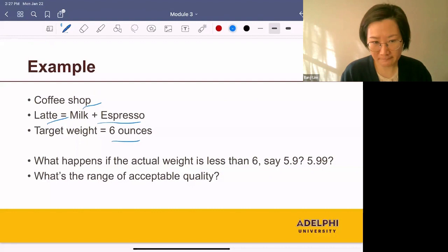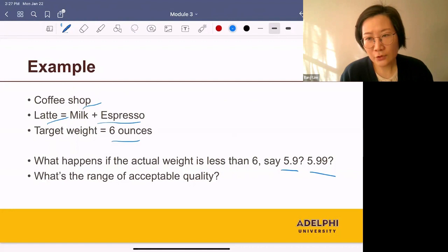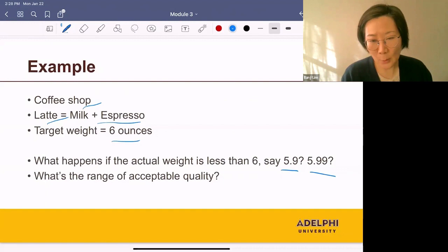This leads to the following question: What happens if the actual weight is less than 6, say 5.9 or 5.99? It's less than 6, but close. Would you accept it or throw it out? What's the range of acceptable quality? Does this indicate a serious problem in your process?